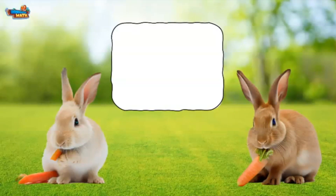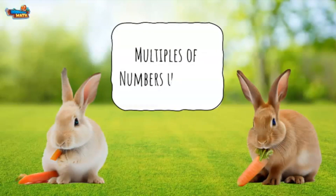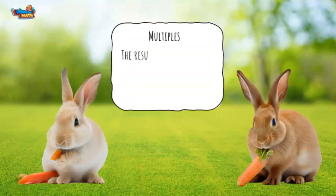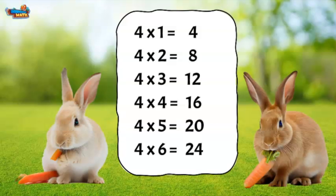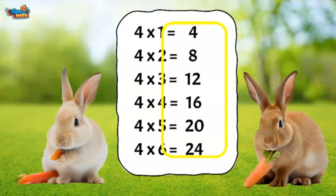In today's lesson, we will talk about multiples of numbers up to 144. Multiples are the result of one number multiplied by another number. Here is a list where each number is multiplied by 4. The multiples of 4 are highlighted by the yellow box.